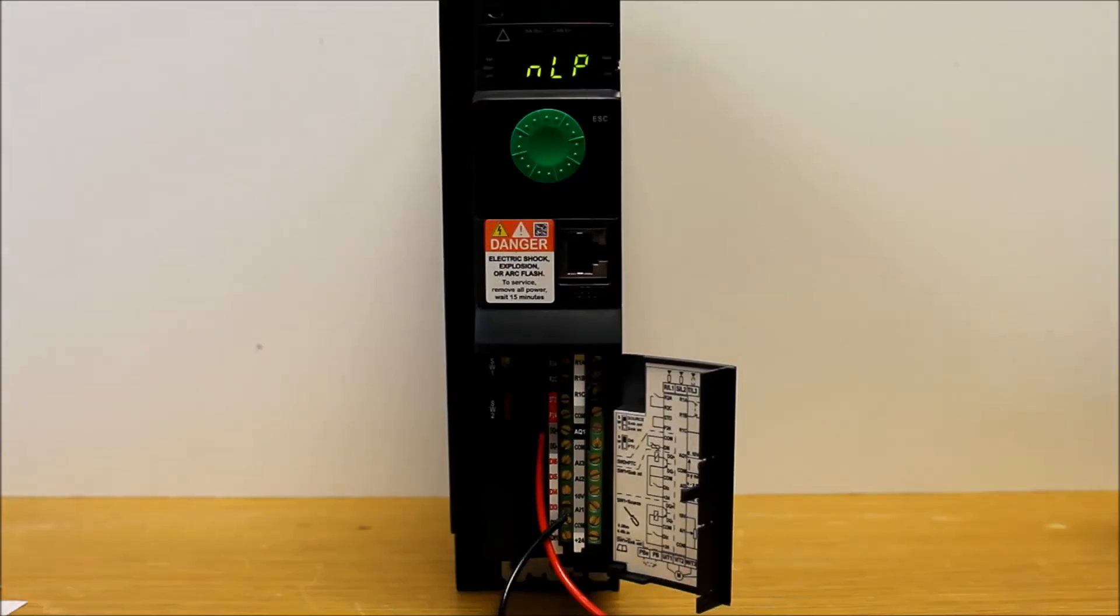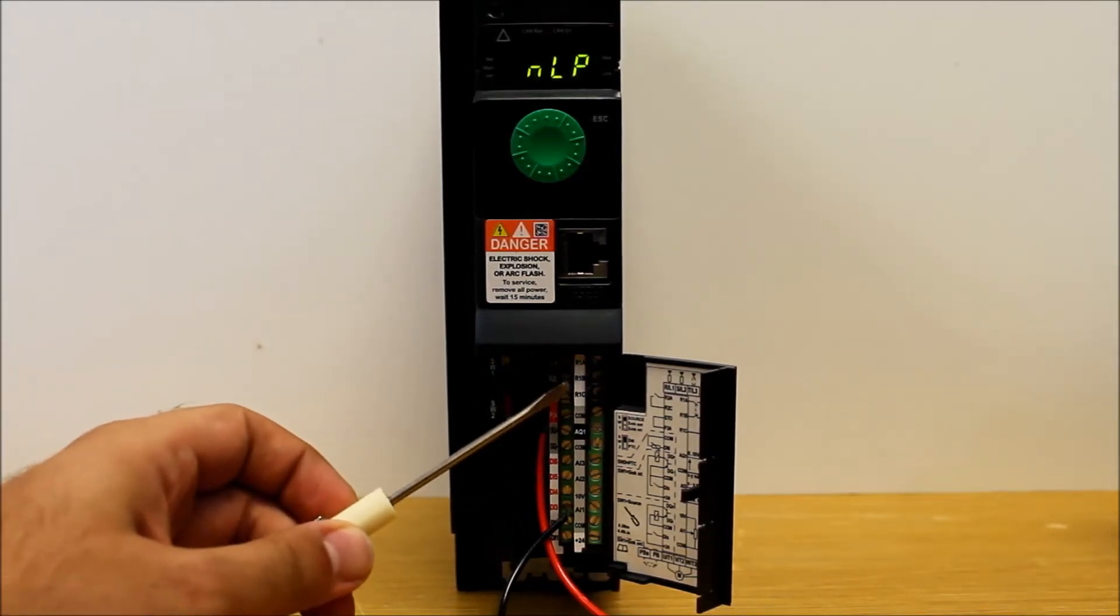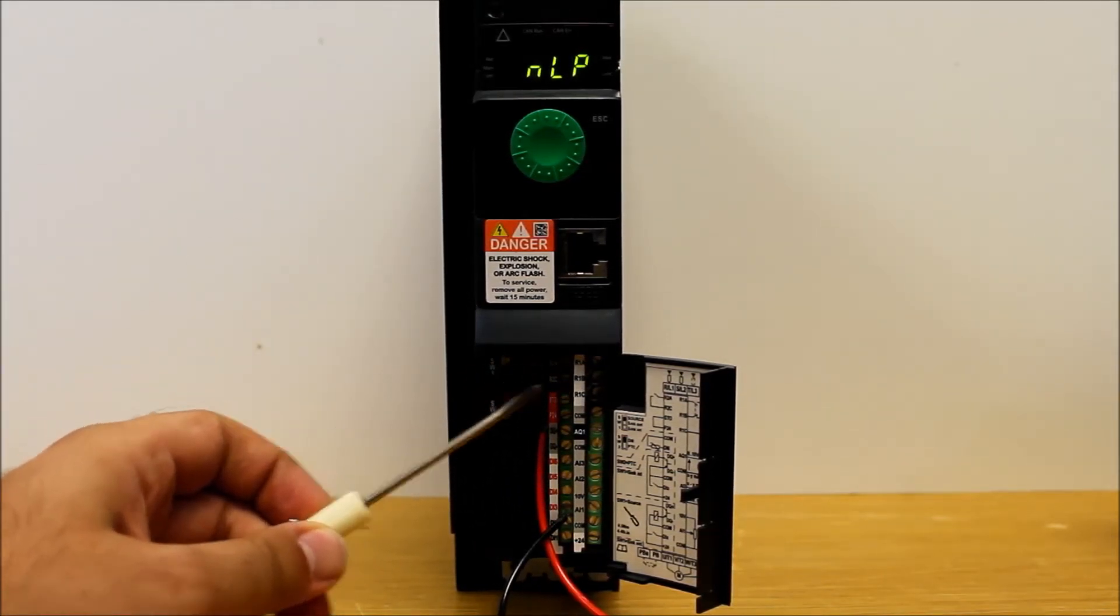In this video, we'll talk about how to program and wire the relays for the ATV320 drive. When I say relays, I'm talking about status relays, not logic, but relays in general. They're labeled here on the ATV320 drive as R1, R2, as you can see here on the top of the wiring block.